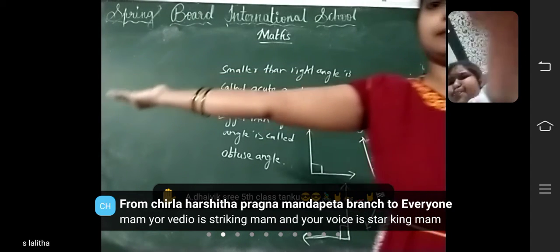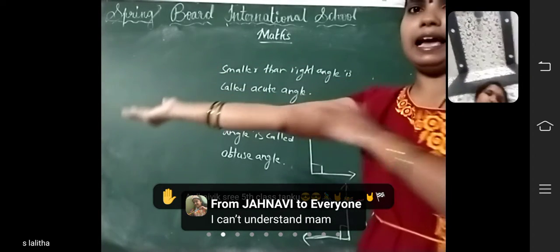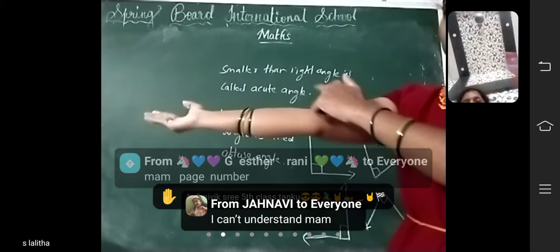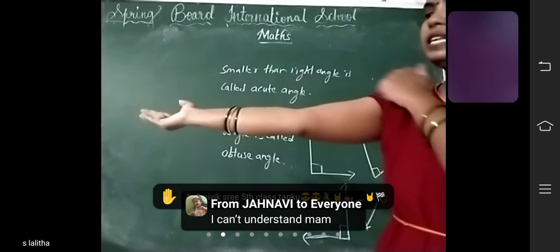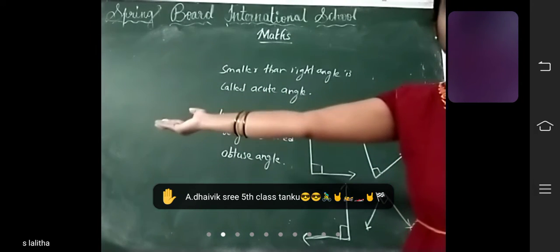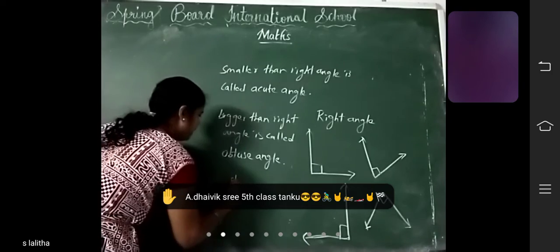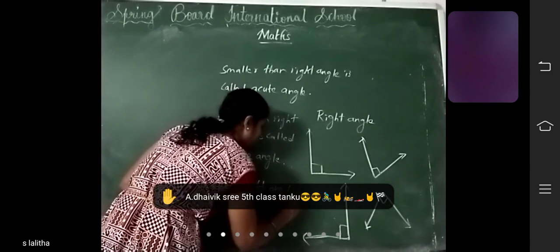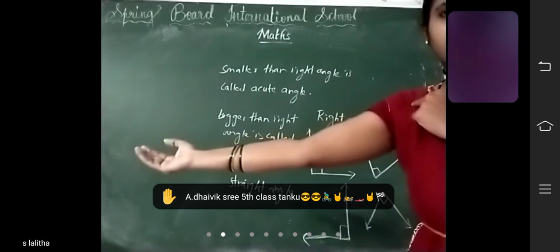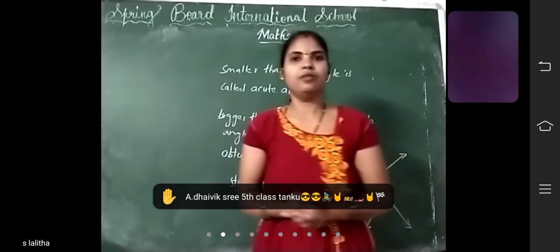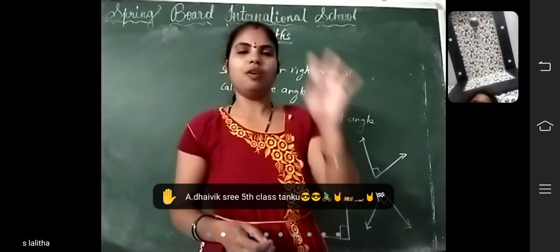Now I am keeping the hand straight. This is one line segment, this is another line segment. Both are joined at this common point — it forms an angle. This is like a straight line, so what do you call this angle? Straight angle. So what have we learned? Four types of angles: right angle, acute angle, obtuse angle, and straight angle.